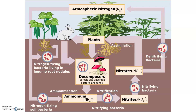We depend on nitrogen-fixing bacteria, and sometimes lightning, to fix nitrogen for us. What that means is they break apart that strong triple bond and bond it to things like hydrogen or oxygen. Those bonds are a lot easier to break and a lot easier to incorporate into the compounds we use in our bodies.